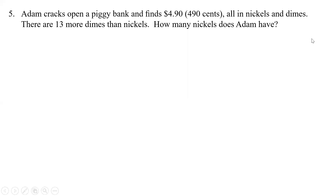Adam cracks open a piggy bank and finds $4.90, or 490 cents. You can write it as $4.90, but then you have to work with decimals. If we use 490 cents instead, we don't have to work with decimals. The key thing here is to avoid decimals, because that's going to cause issues.